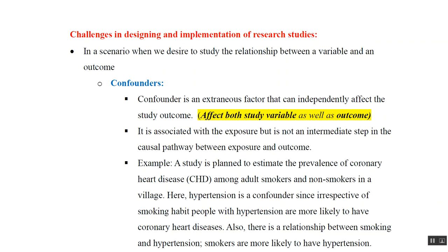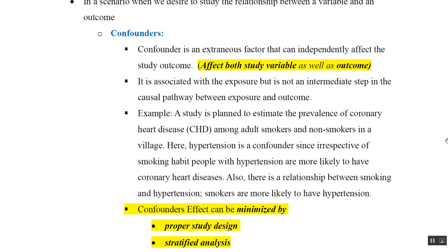Let us understand it by an example. A study is planned to estimate the prevalence of coronary heart disease among adult smokers and non-smokers in a village. Here, hypertension is a confounder, since irrespective of smoking habit, hypertension itself is likely to cause coronary heart disease. There is a relationship between smoking and hypertension, and smokers are more likely to have hypertension, which may itself lead to coronary heart disease. So a confounder may affect both the study variable as well as the outcome.